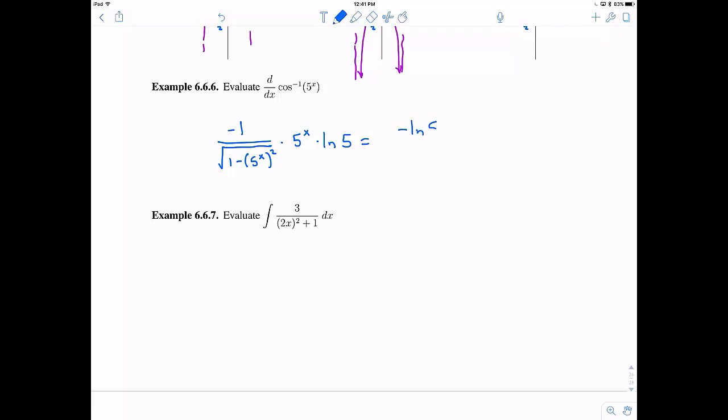Let's rewrite it one last time just to make it look a little bit nicer. So this would be the negative natural log of 5 times 5 to the x. And then we can simplify this down. This is going to be 5 to the 2x, 1 minus that all in the square root. So there we go.